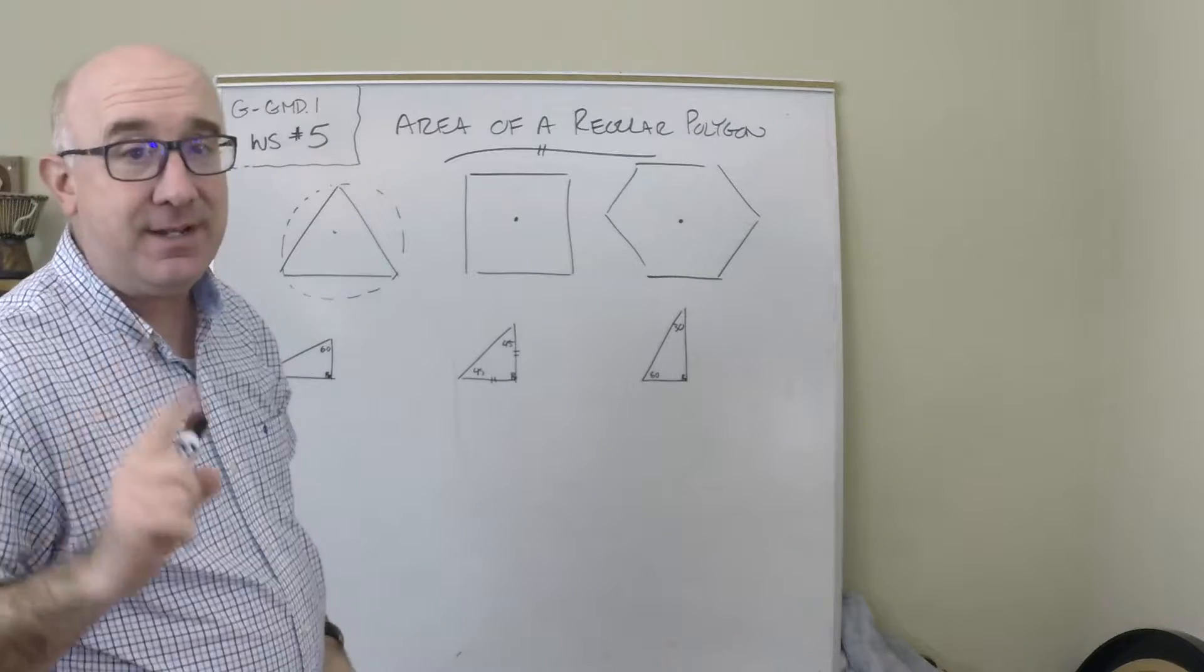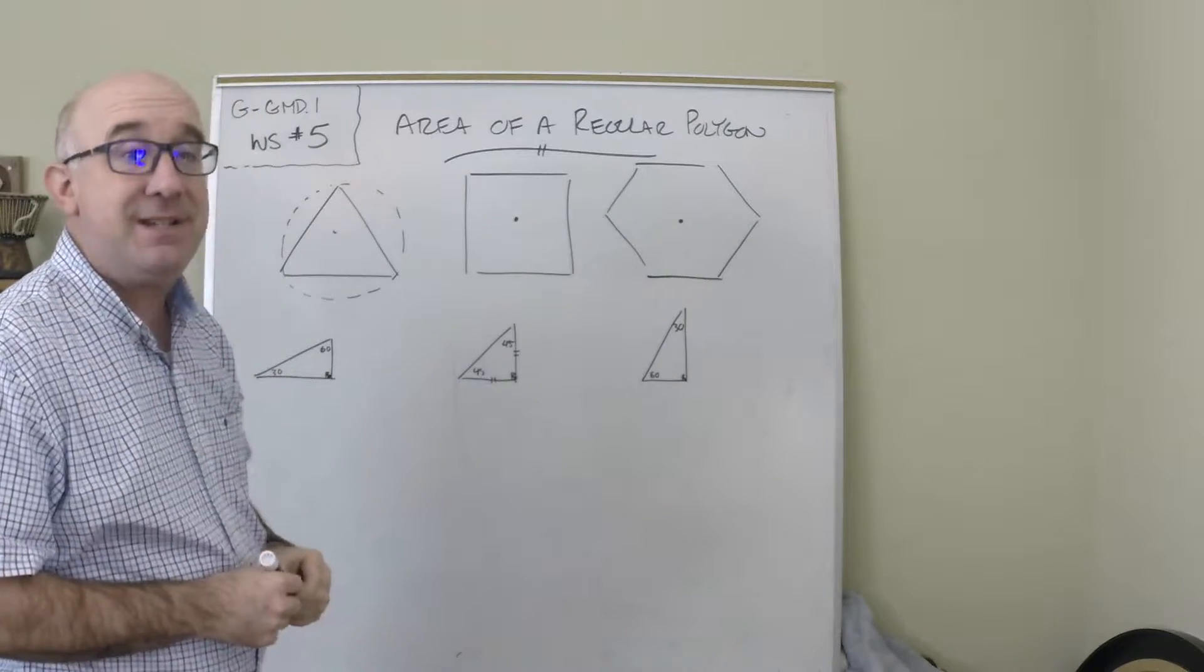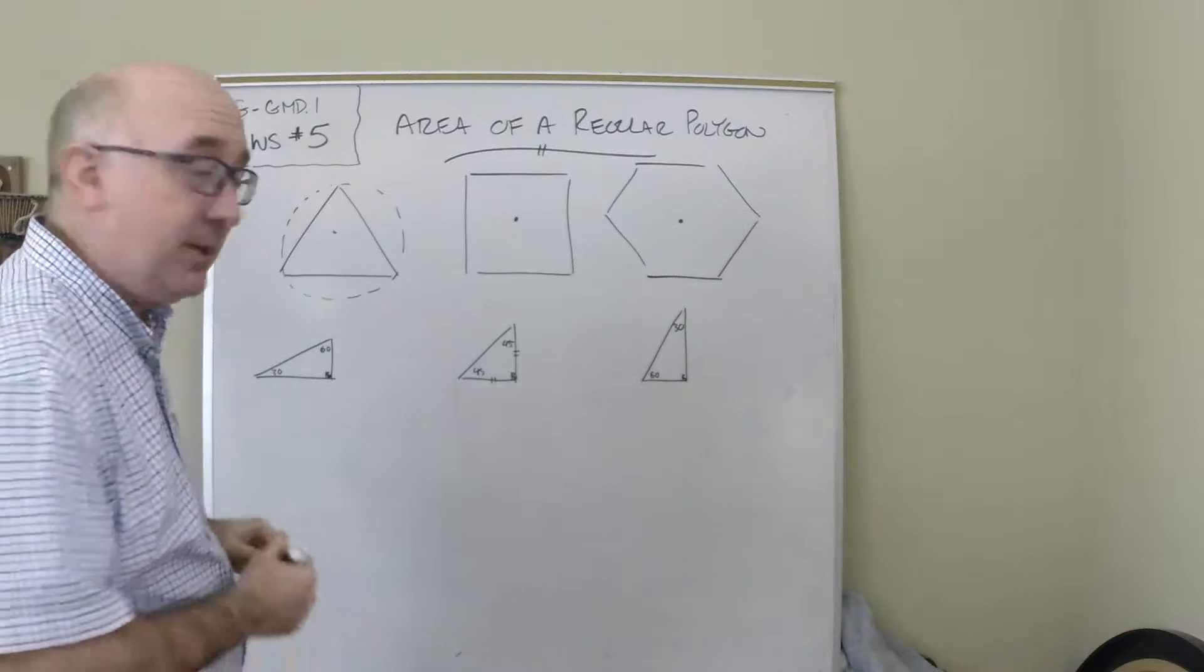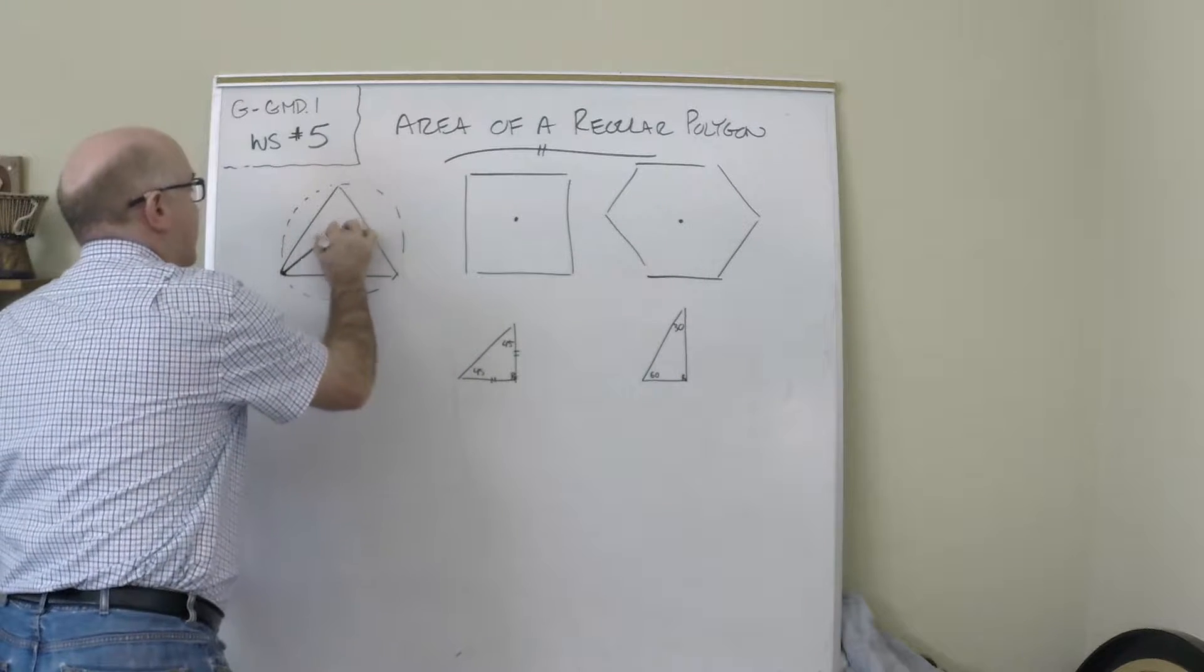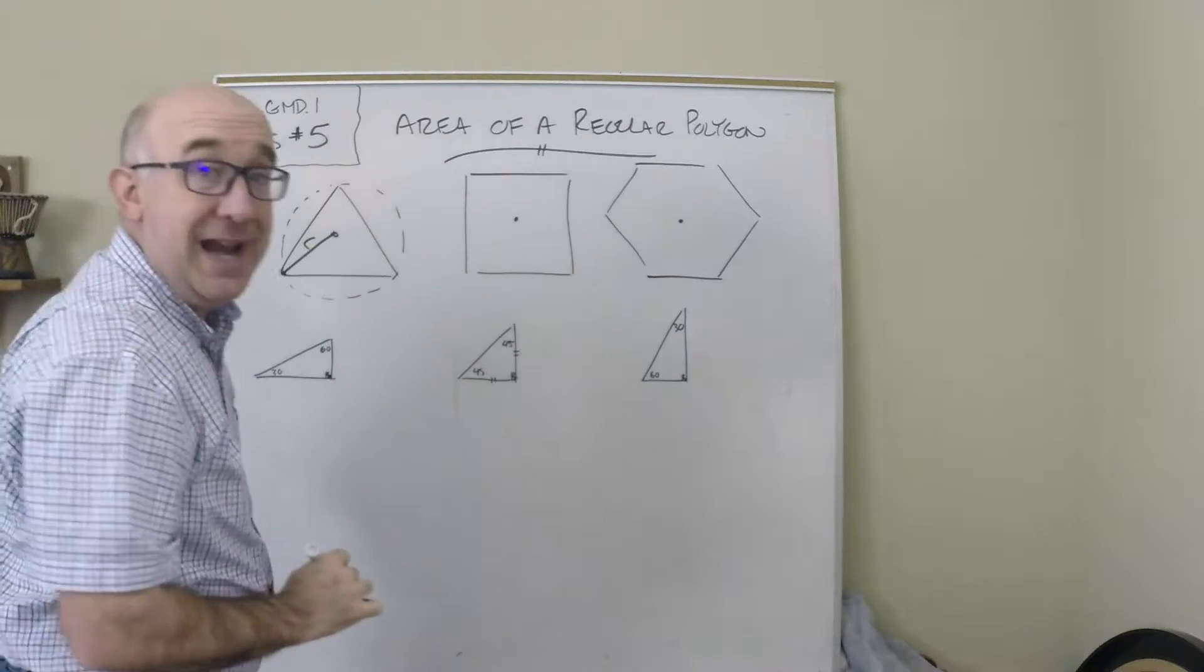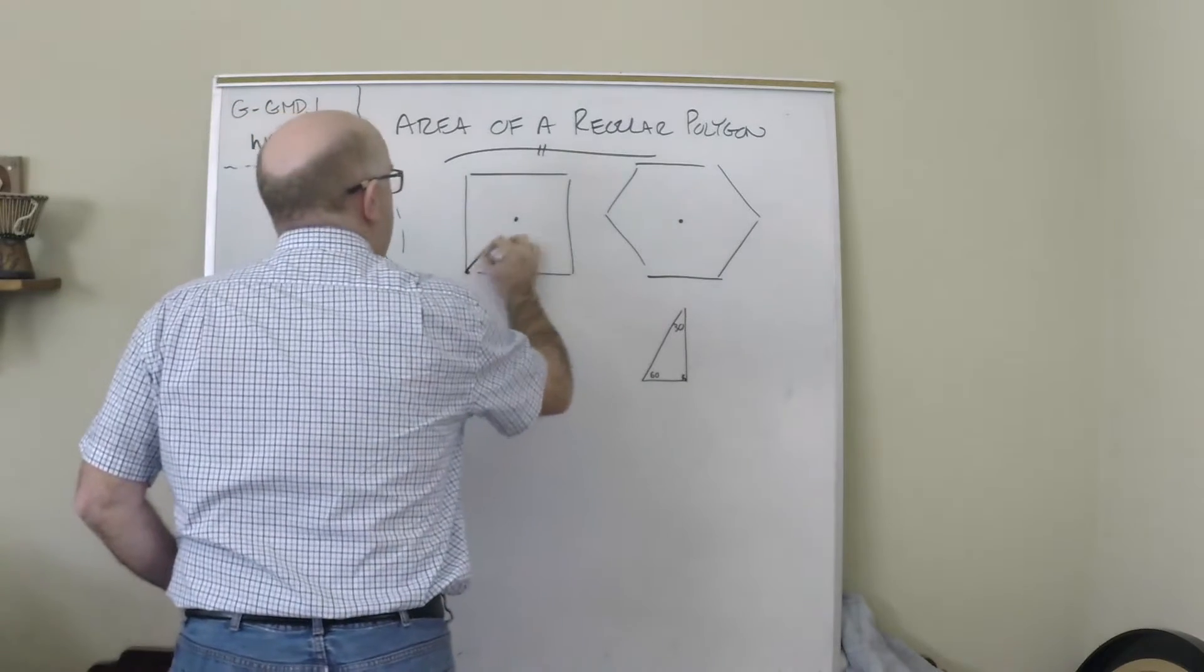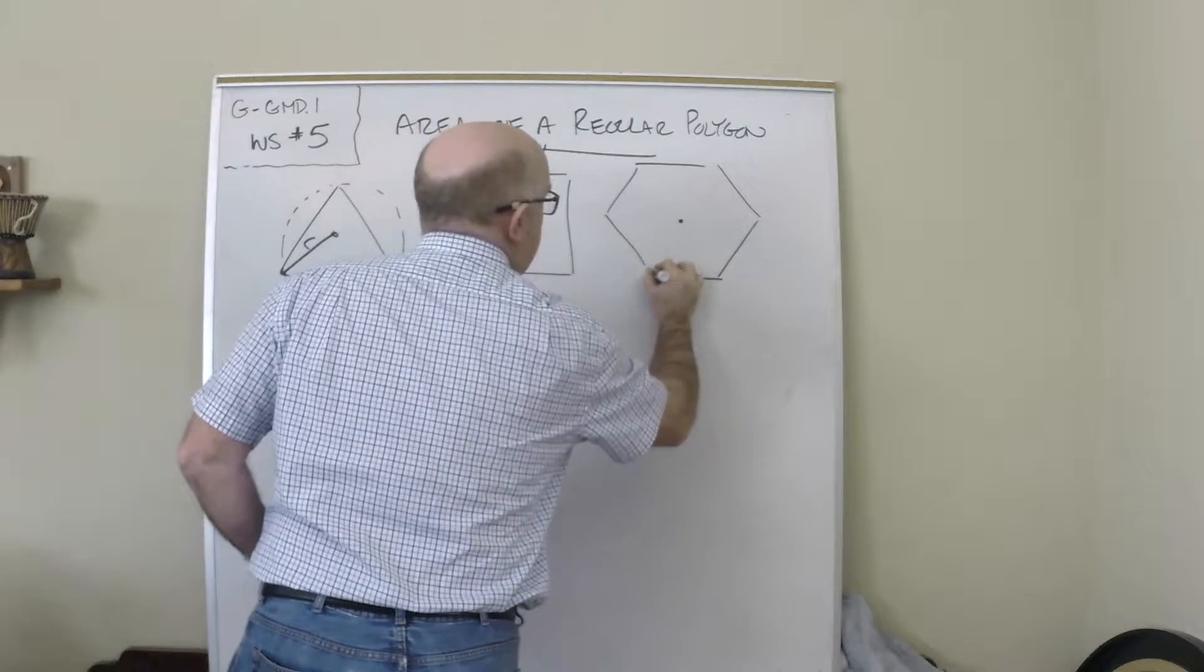Because of that, one of the new terms is a radius of a regular polygon. The line from a vertex to the center is known as the radius. So this is a radius, this is a radius.